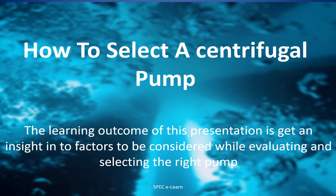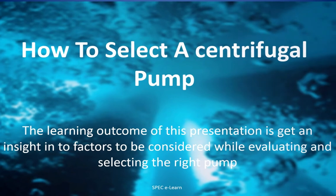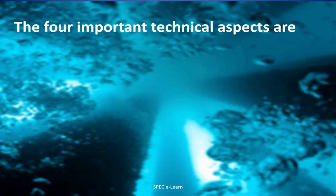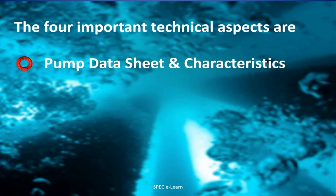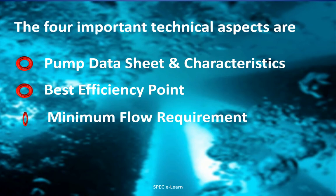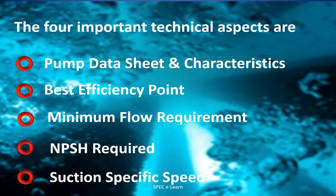Listen to the narration carefully as you read the subject matter in each slide. Part 2 of sizing and selection of centrifugal pumps covers broadly four aspects: pump data sheet and characteristics, best efficiency point, minimum flow requirement, NPSH required, and suction specific speed.